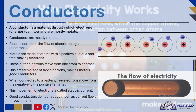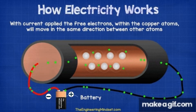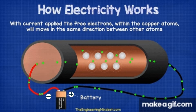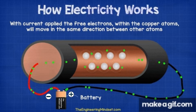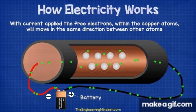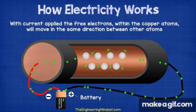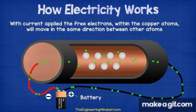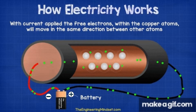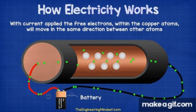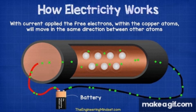When a metal wire is connected to a battery, the free electrons in the metal begin to move in the same direction — from the negative terminal of the battery, through the wire, towards the positive terminal. This movement of electrons forms an electric current. Good conductors not only allow charge to flow easily, but they also do not heat up much when current passes through them.